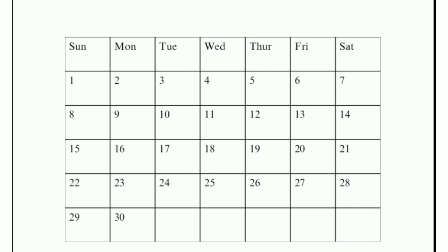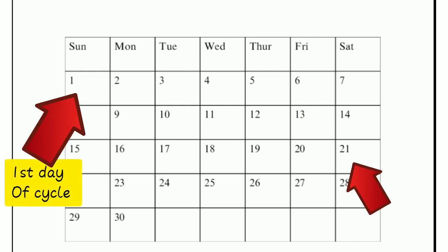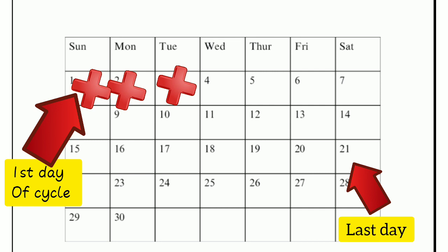Given the scenario for a 21-day cycle, using this illustration of the calendar — if you're taking the first day as the first day of your menstrual period, you're bleeding on the first, second, and third day. The last day being the 21st day, that's the last day of your menstrual cycle.